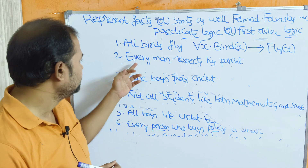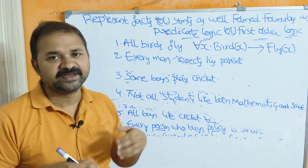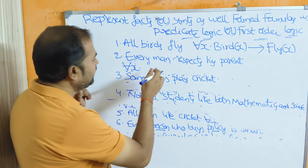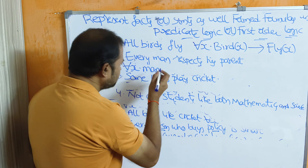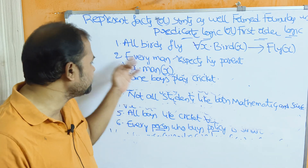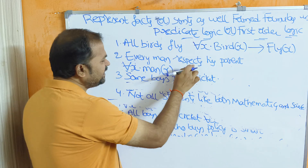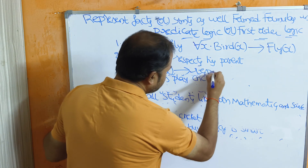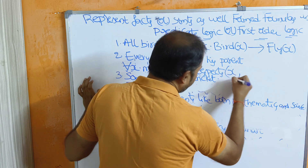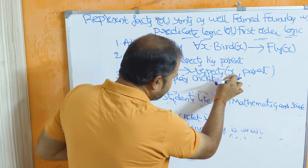Second statement: every man respects his parent. If the sentence contains 'all', 'every', or 'each', then we have to use the universal quantifier — for all X. All men are represented by variable X, and since the sentence contains 'every', we use the implication symbol. The predicate is 'respects', so we write respects(X, parent) — every man respects his parent.